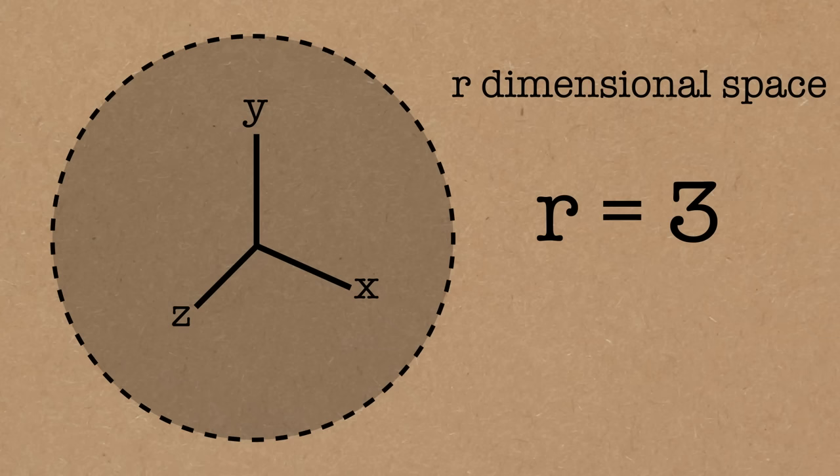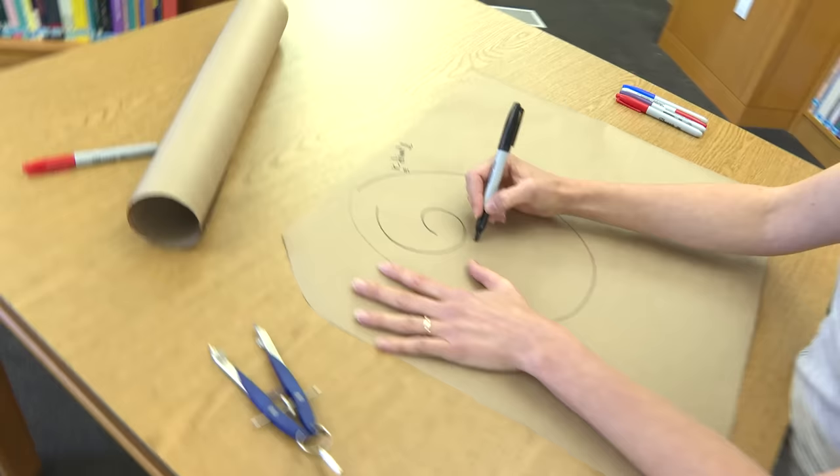So let's say I'm in an R dimensional space. So R is a variable here. So it's like if we were in our real three-dimensional world, R would be three. On the XY plane, R was two, but I want to allow R to be something more general.